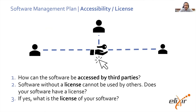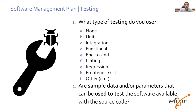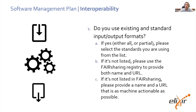Looking at license, the questions could be: can this be accessed by third parties? If there's a license, what is the license? For documentation: where is the documentation located, what's the purpose of the software, and what are the different functions that the documentation lists? In terms of testing: what are the different types of testing available? Is there any sample data? Are parameters available to use the software and test it out? For interoperability, what are the standards? Here we try to connect with existing registries — for example, FAIRsharing was one option that can be used to highlight standardized input and element formats.